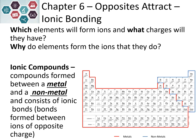Ionic compounds form between metals and nonmetals. The metals are on the left-hand side of the periodic table, and nonmetals are on the upper right-hand side of the periodic table. Metals like to form positive charges, and nonmetals like to form negative charges. Those opposite charges attract to each other, and we can tell if it's an ionic compound because it's a metal and a nonmetal.